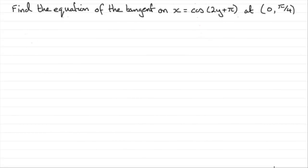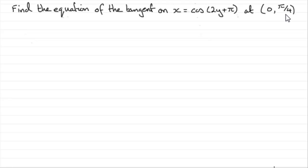In this question, we've got to find the equation of the tangent on the curve x equals cos of 2y plus π, at the point where x is 0 and y is π upon 4.